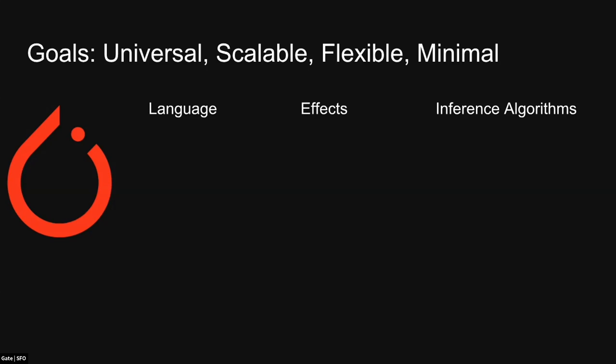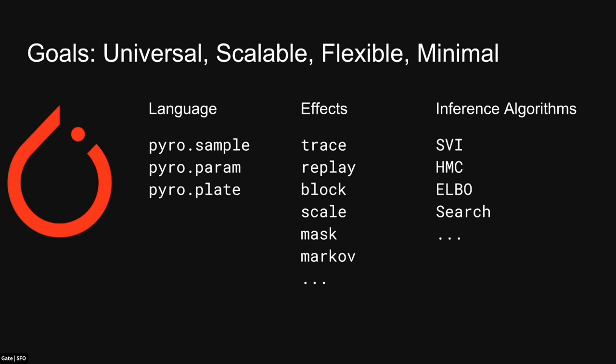To achieve the other two goals of flexibility and minimality, we've created a three-level architecture: a user-facing language, a low-level effects library, and then a set of high-level inference algorithms that you can use to train models. The language is very lightweight — it just consists of a few primitives on top of Python and PyTorch: the sample, plate, and param primitives. We have a low-level effects library, a library of algebraic effects — mostly for internal use, but a really powerful pattern that's since been adopted by the TensorFlow folks. Using these low-level effects, we build higher-level inference algorithms, combining them in different ways.